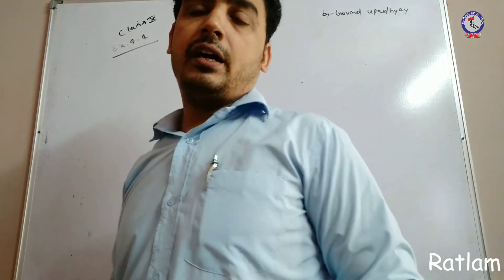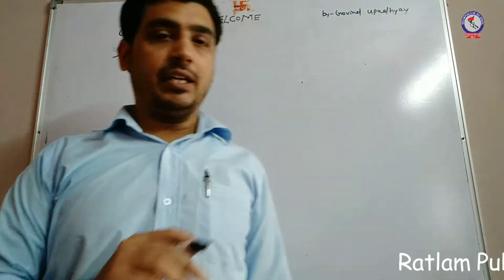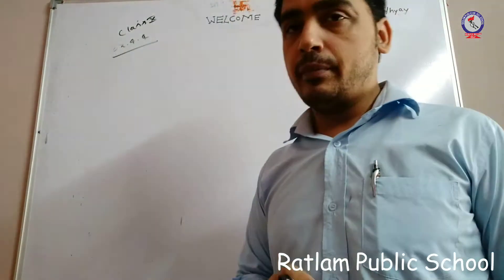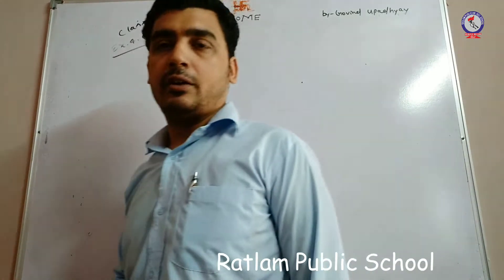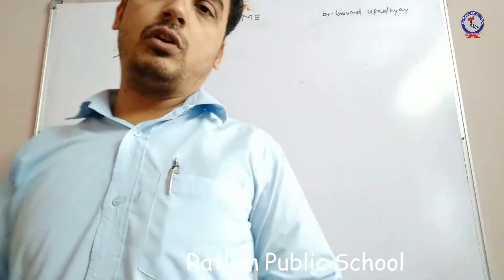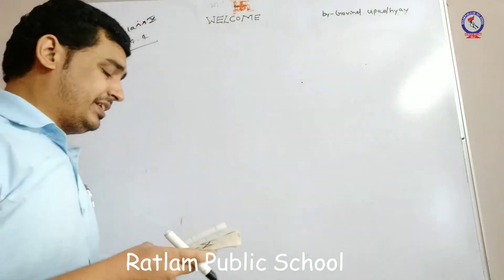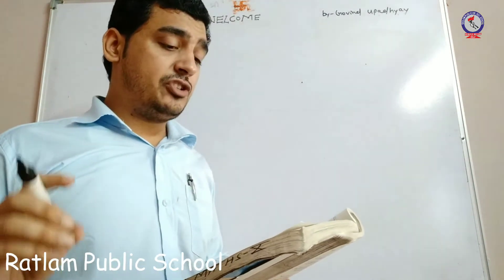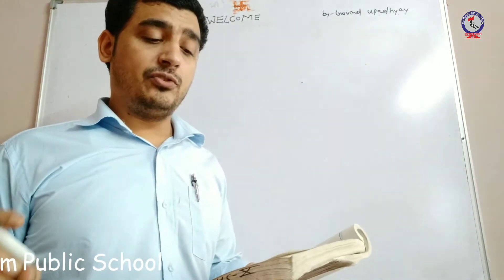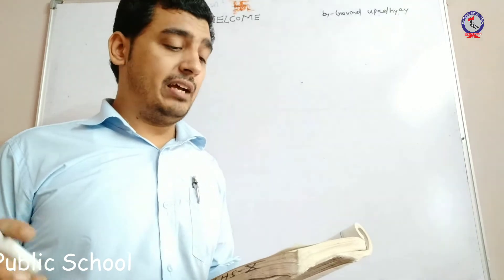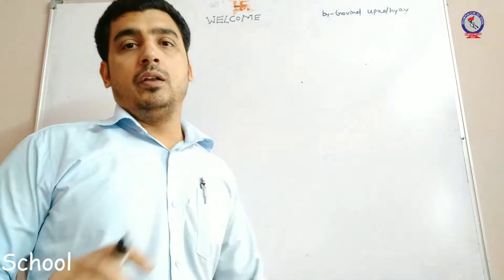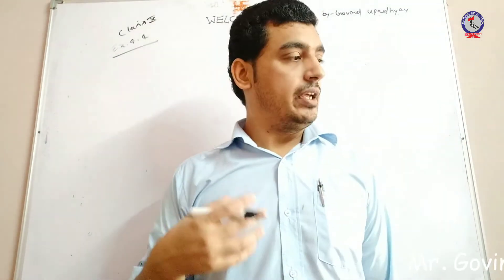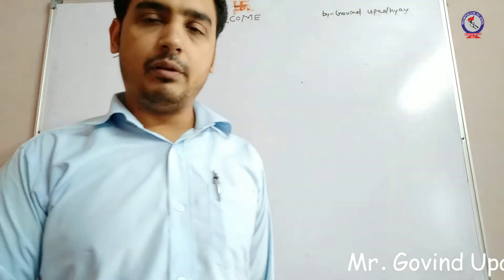Hello students, we are discussing class 10th exercise 4.4. Question number 2 is: find the values of k for each of the following quadratic equations so that they have two equal roots. We need to find the k value for which we have two equal roots available.